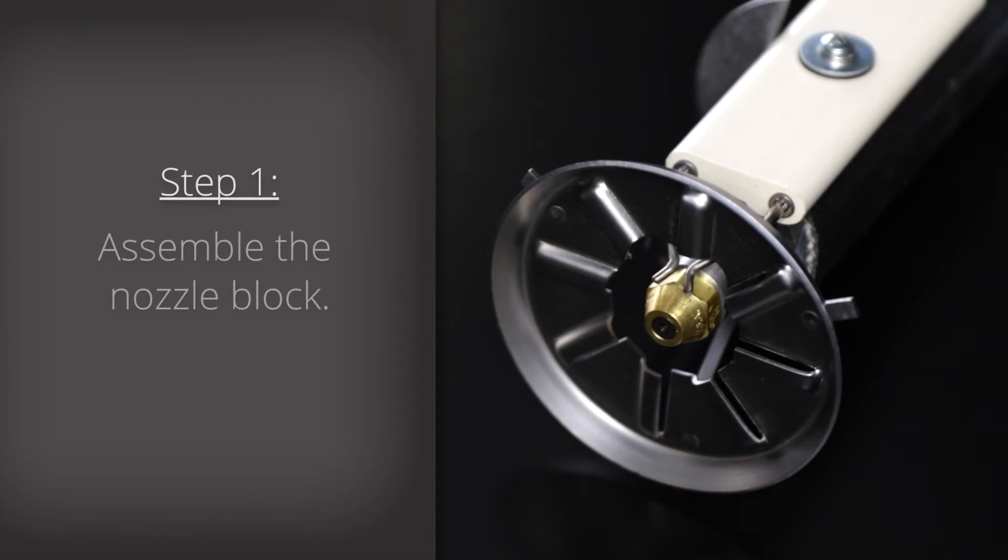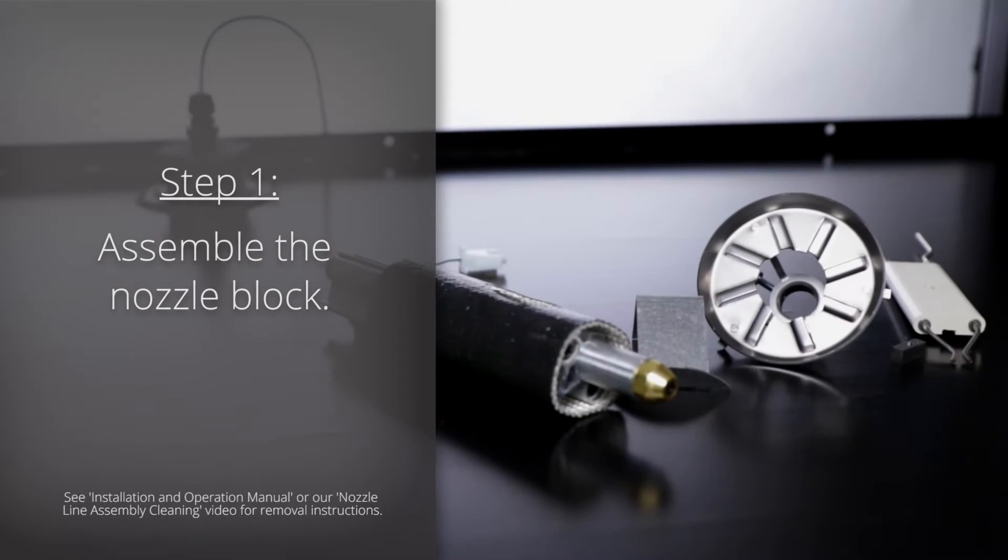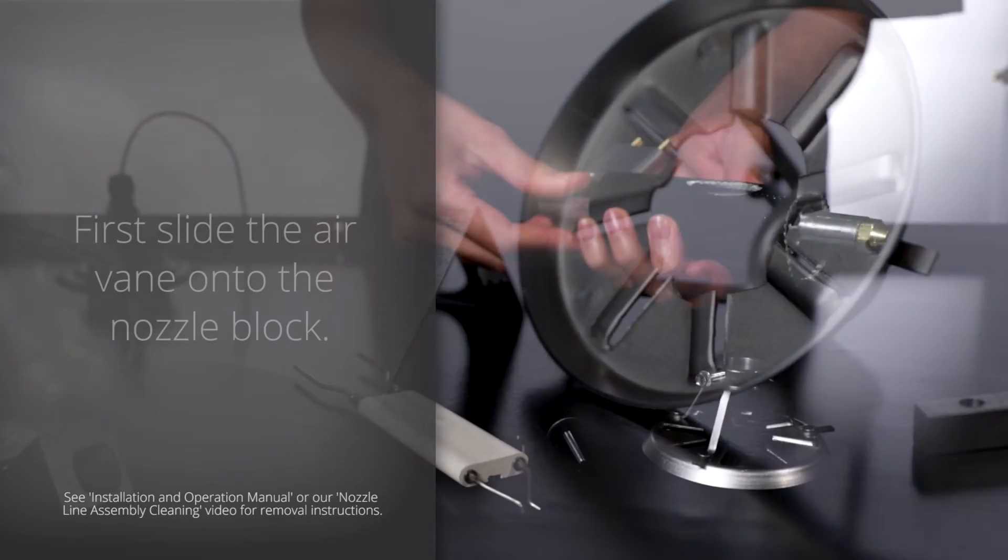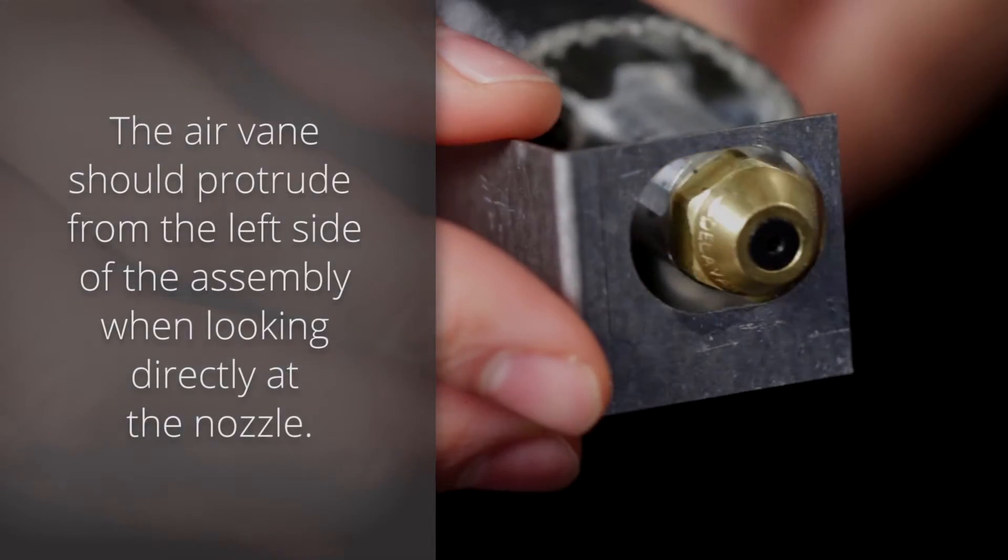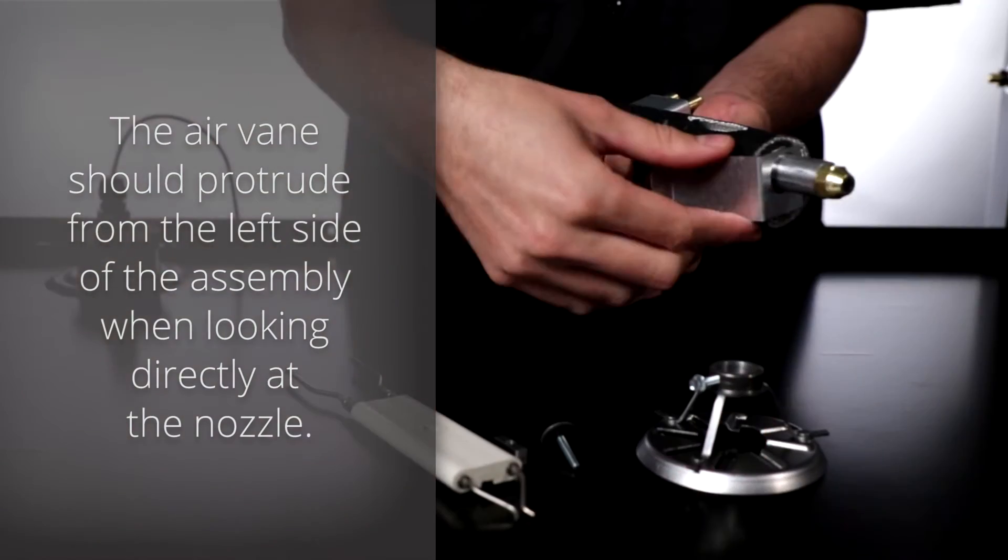Step 1: Assemble the nozzle block. After cleaning the nozzle block assembly components, first slide the air vane onto the nozzle block. The air vane should protrude from the left side of the assembly when looking directly at the nozzle.